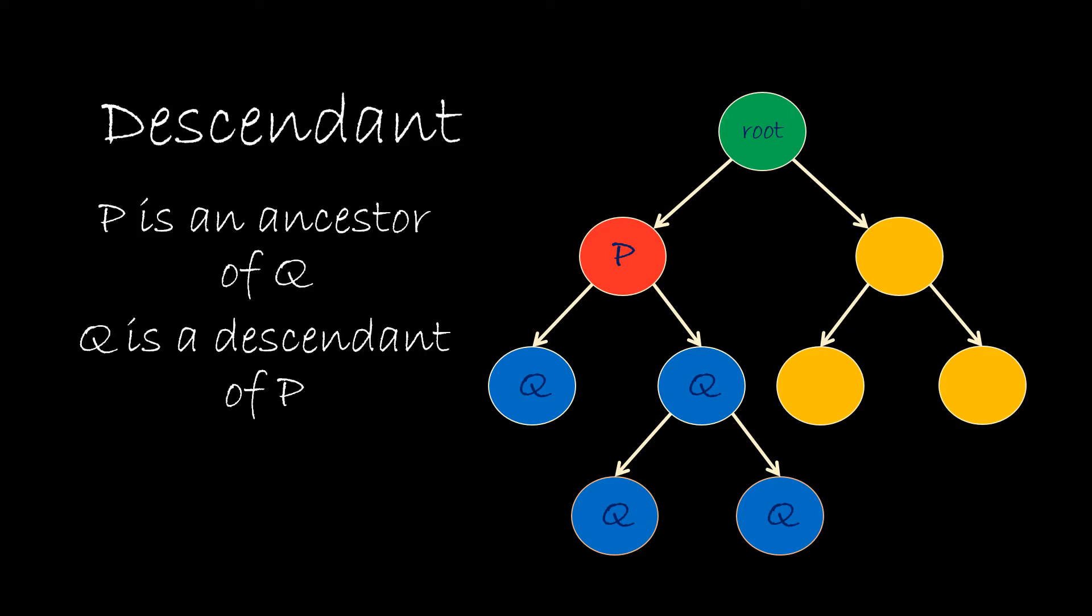Opposite to it is descendant. If P is an ancestor of Q, then Q is called descendant of P.